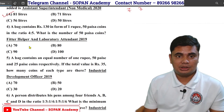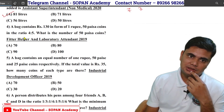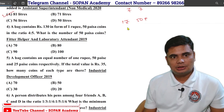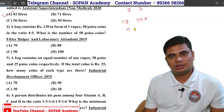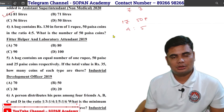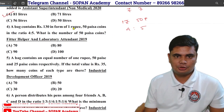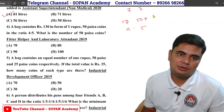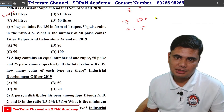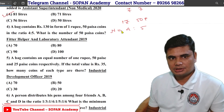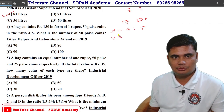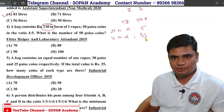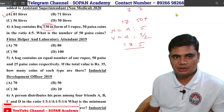A bag contains 130 rupees in the form of 1-rupee and 50-paise coins in the ratio 4 is to 5. What is the number of 50-paise coins? So the number of coins is in ratio 4 is to 5. The total value is 130.